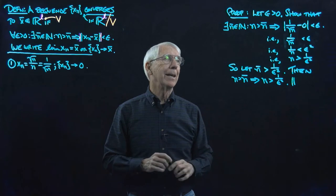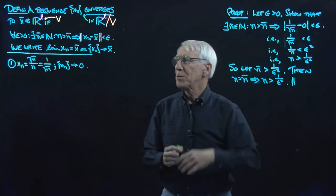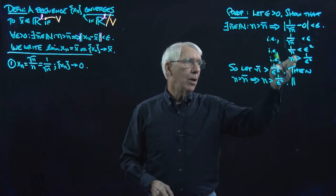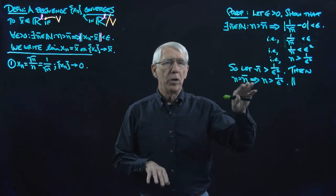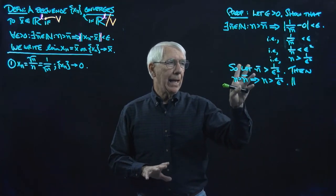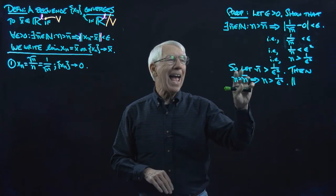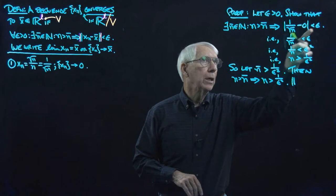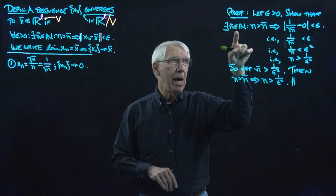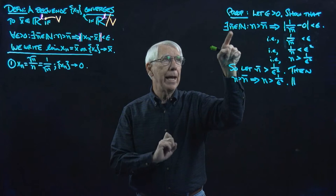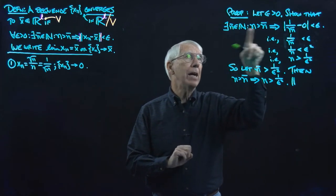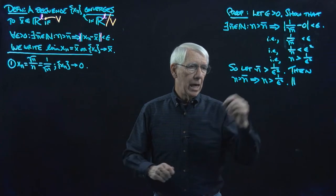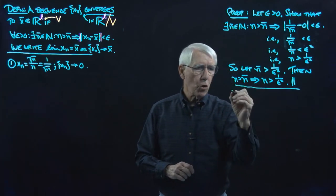That was a very easy example because this particular sequence made it easy to see what would be a sufficient N̄ to make this work. So I actually could find one. Notice: exists. I only have to find one N̄, but I have to find an N̄ that works for this epsilon. So a couple things to notice here.